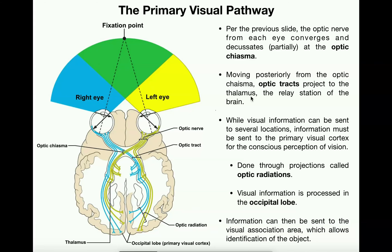Specifically, the optic tracts project to a nucleus of the thalamus called the lateral geniculate nucleus. One of the areas that receives information from the lateral geniculate nucleus of the thalamus is the primary visual cortex. The projections from the thalamus are called optic radiations, and they project to the primary visual cortex, which is in the occipital lobe of the brain.